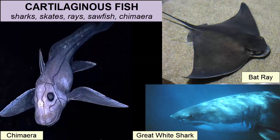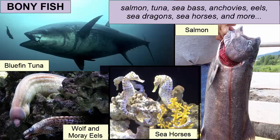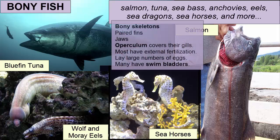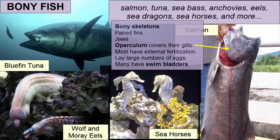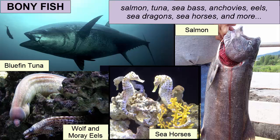Chondrichthyes have paired fins, no swim bladder, and gill slits. They consist of sharks, skates, rays, sawfish, and chimaera. Class Osteichthyes, or bony fish, consists of fish with hard, strong, lightweight bony skeletons, paired fins, and jaws. An operculum covers their gills; most have external fertilization and lay large numbers of eggs. Gas exchange happens through gills, and many have swim bladders. Bony fish include salmon, tuna, sea bass, anchovies, eels, sea dragons, seahorses, and many more.